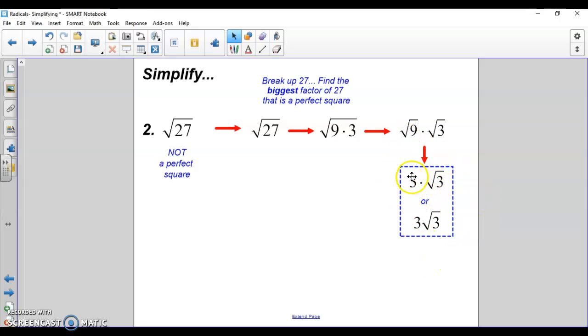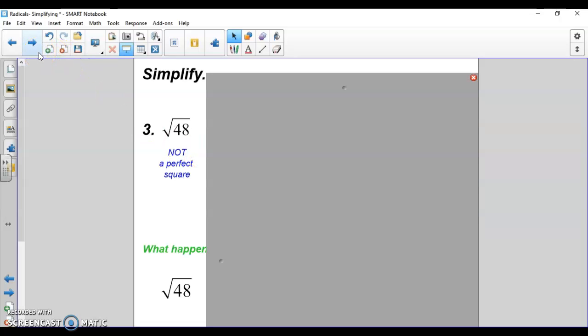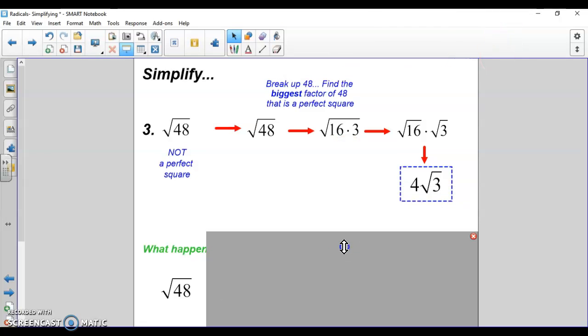Next, this one you gotta watch. 48. We're looking for the biggest factor of 48 that's a perfect square. Your biggest factor is going to be 16. 16 times 3 is 48. Square root of 16 is 4. Square root of 3 is square root of 3. So 4 radical 3 is your answer.